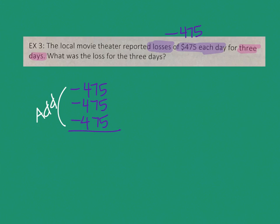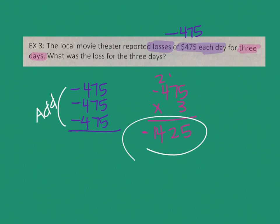Another way to solve this is to multiply negative 475 times 3. Either way works — it doesn't matter. So 3 times 5 is 15, 3 times 7 is 21 plus 1 more is 22, and 3 times 4 plus 2 is 14. When you either have all of them negative, the answer is negative, or if you multiply a negative and a positive, the answer stays negative. So altogether, they lost $1,425.